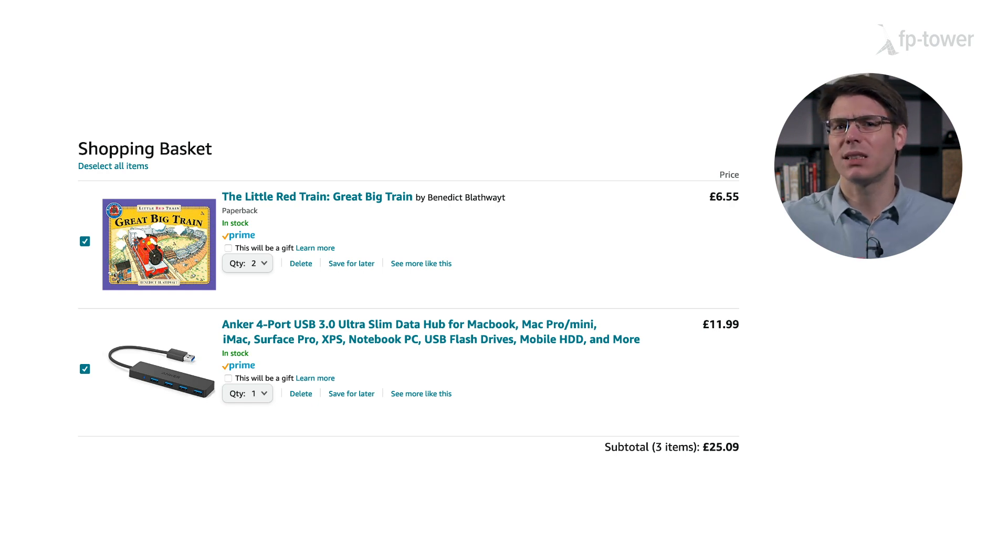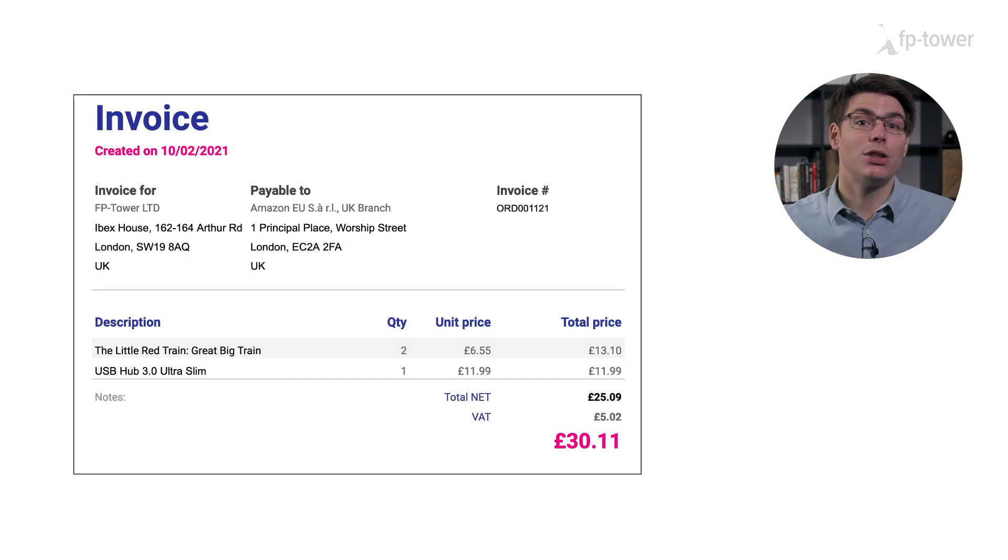Our job will be to generate an invoice for an order, which should look like this. The invoice contains a line for each item and the total for the entire order both before and after taxes. On the header of the invoice we need to include the customer's name and address, our company's address, the invoice number, and the date at which we generated the document.